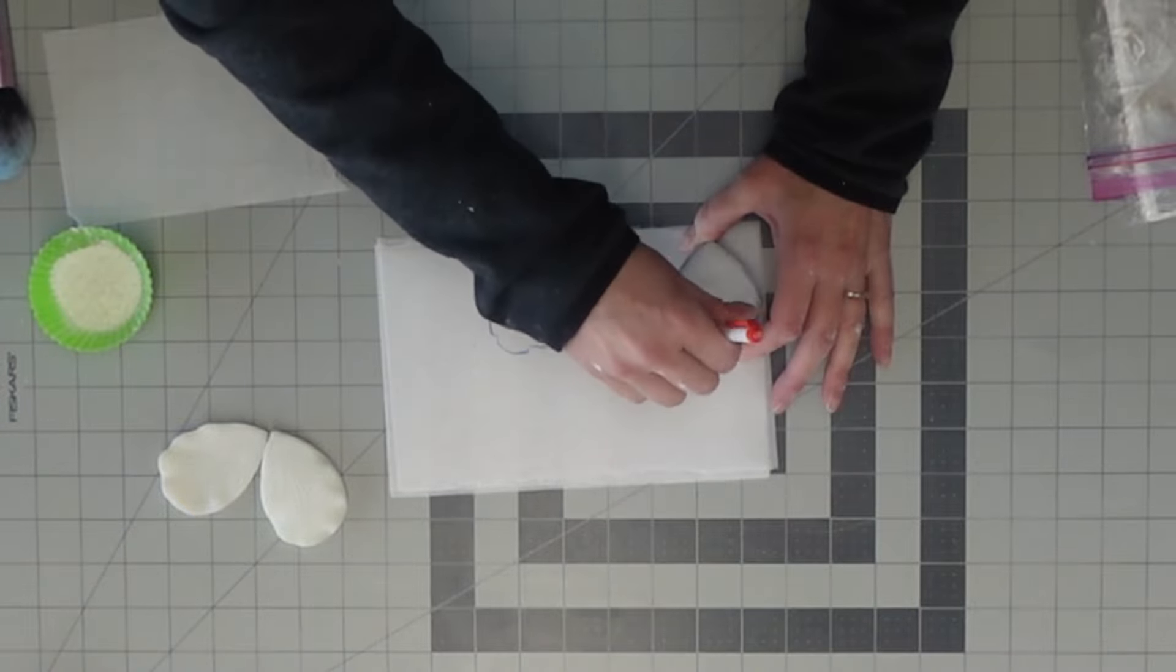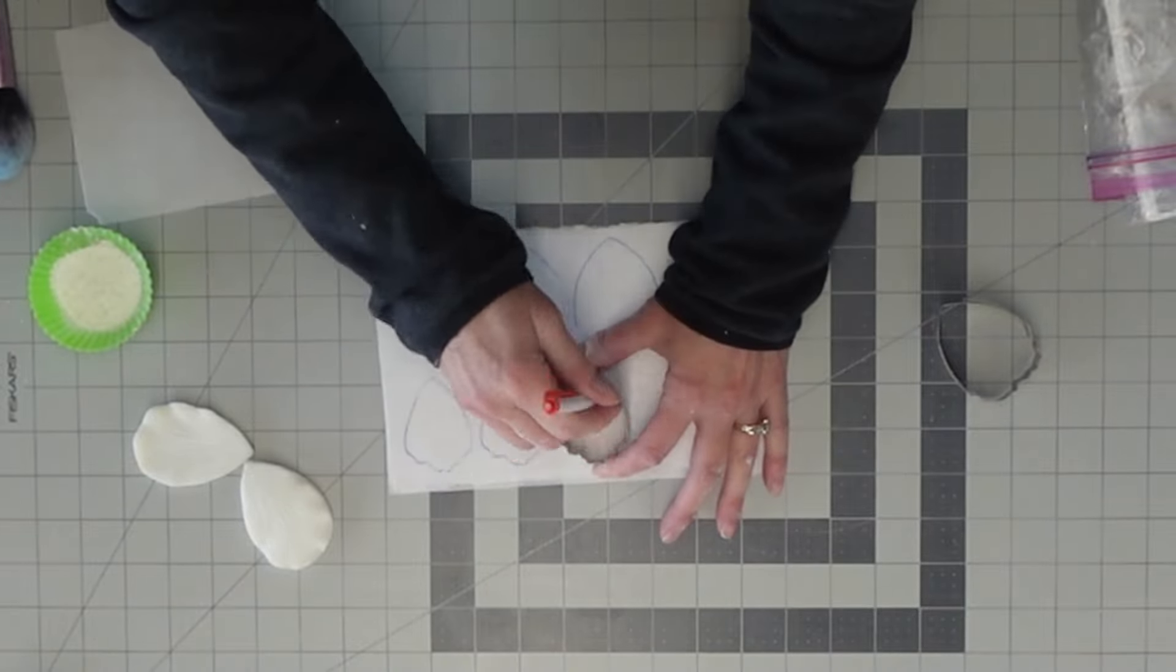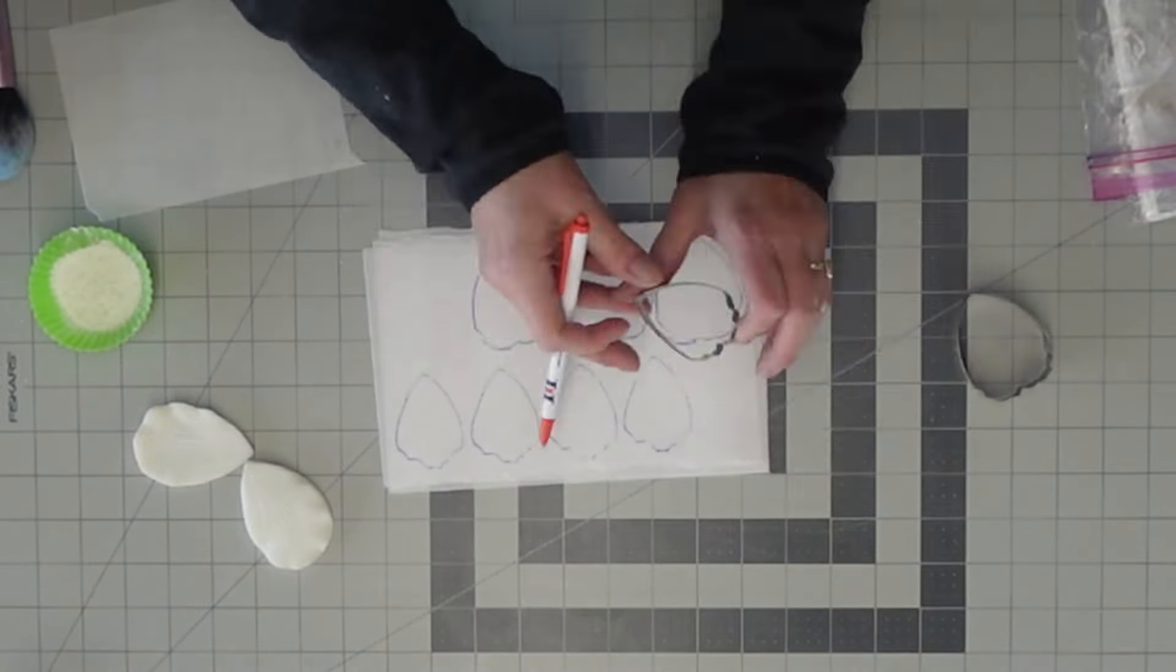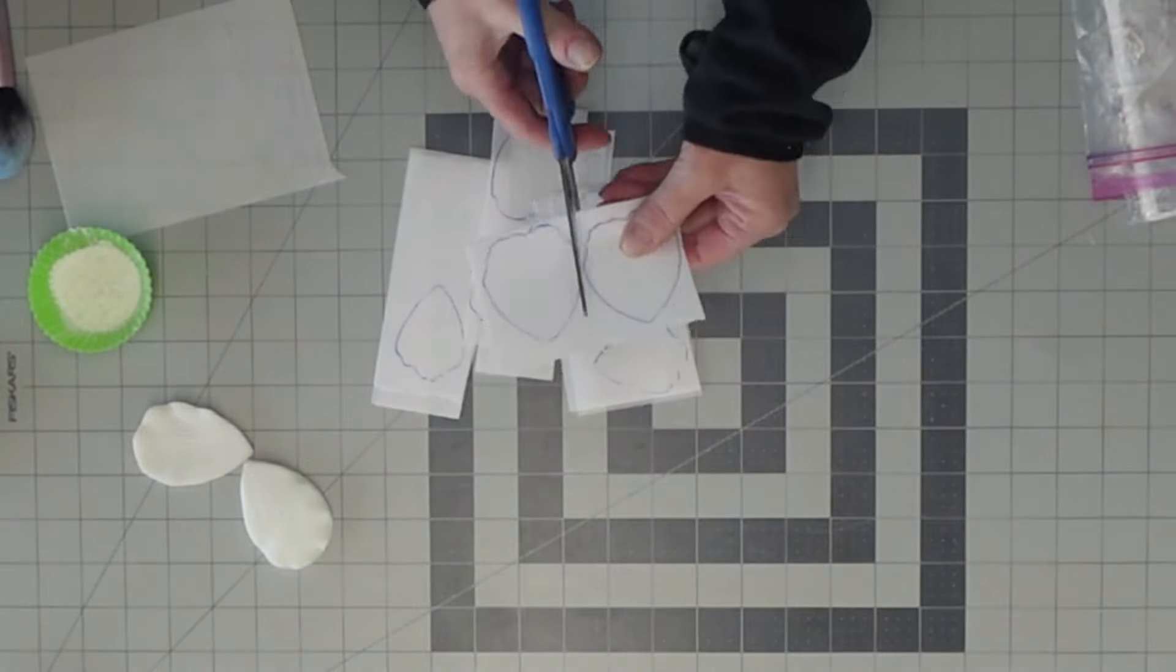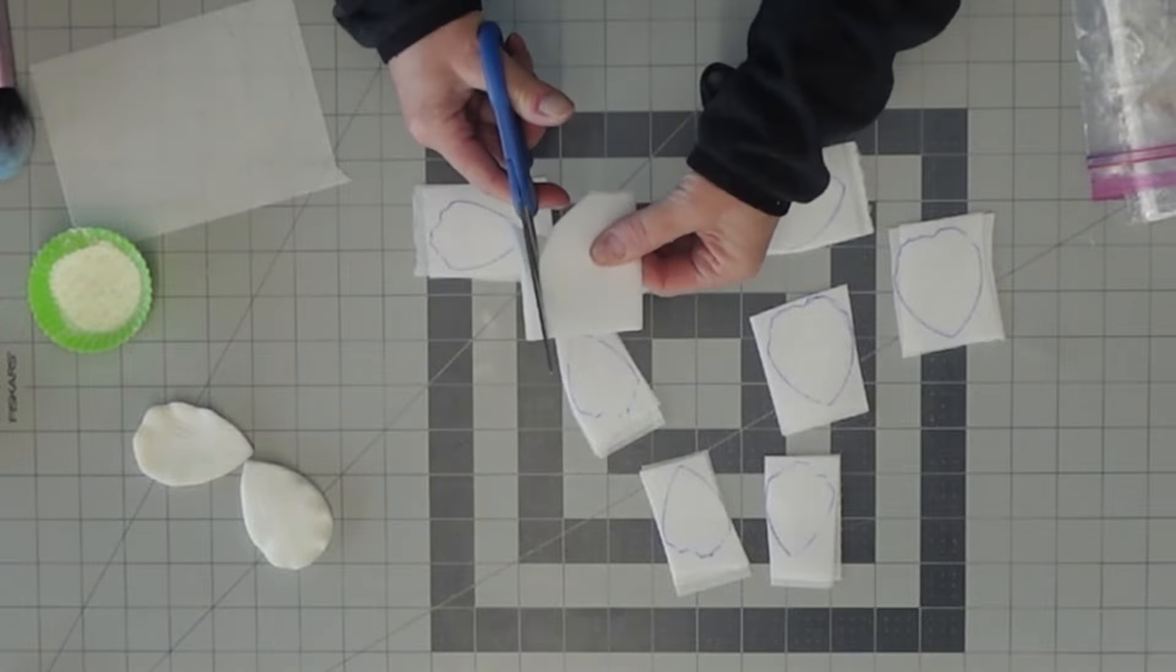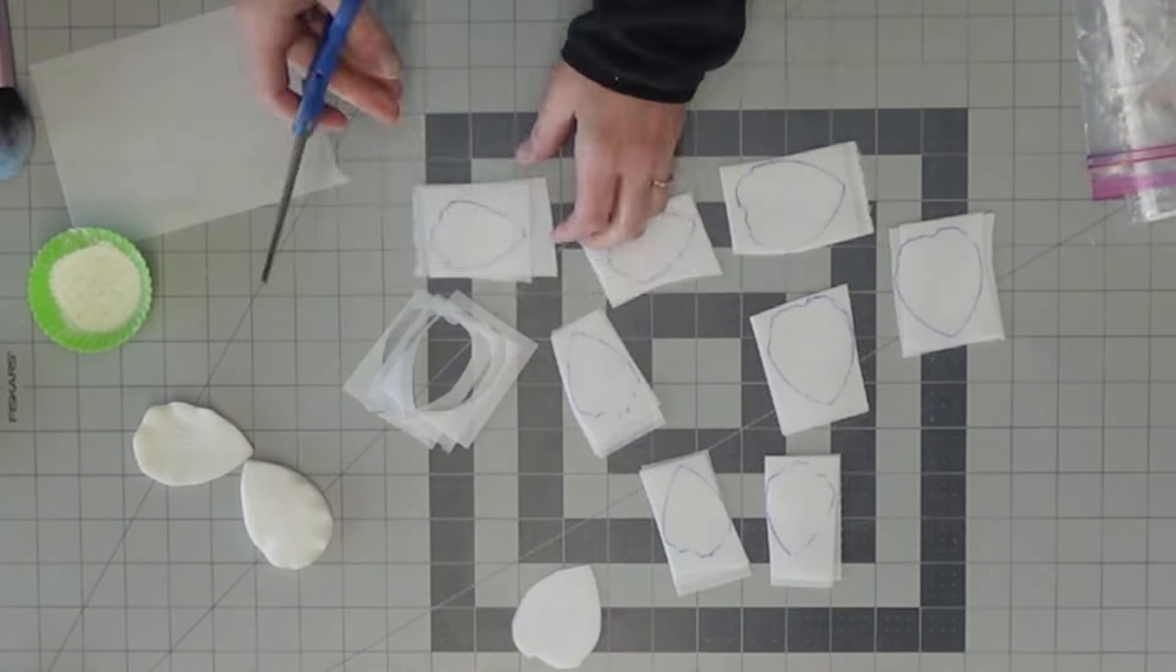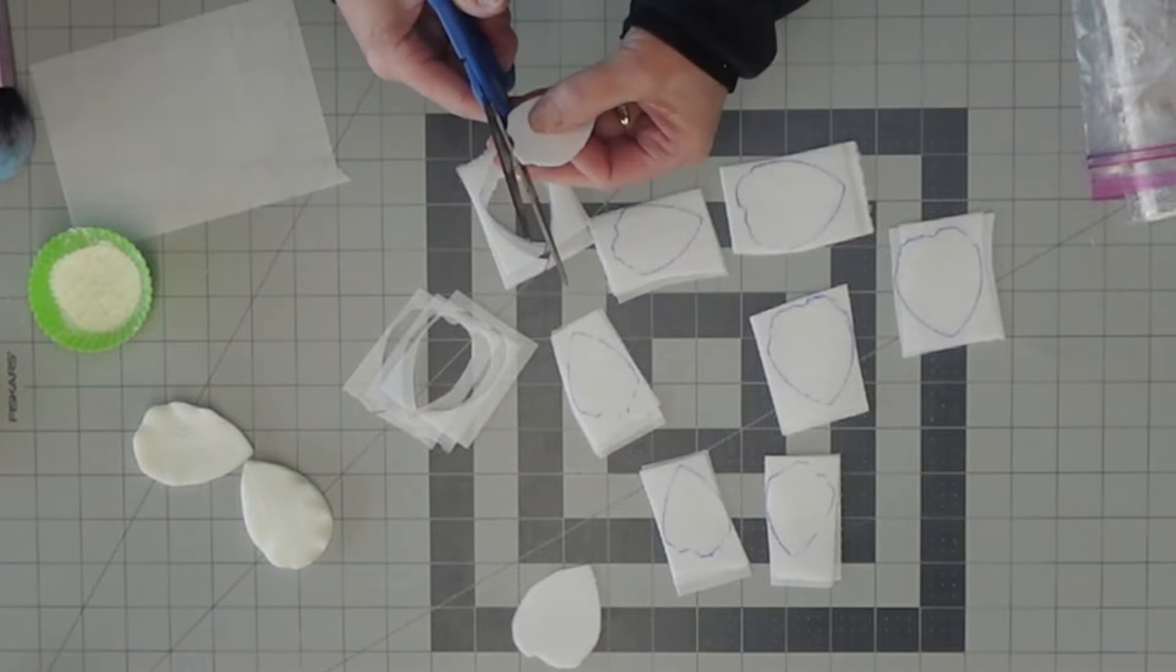So let's get started with the wafer paper petals. I am just using my peony cutters and marking out the shape on some wafer paper. Now this is just zero grade wafer paper. And I cut out, I believe, I'm not sure how many total.